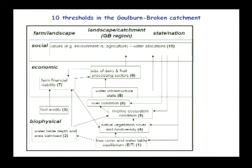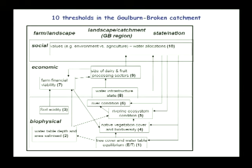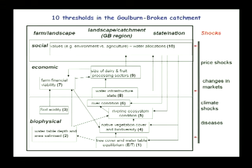I want to move on to multiple interacting thresholds, using our work in the Golden Broken catchment where we identified 10 thresholds we thought were critical. Each box is actually a threshold effect — they're in the social, economic, and biophysical domains of that system, occurring from the farm and landscape scale through to the state and national scale. So it's multi-scale and multi-domain. And that system is subjected to a bunch of shocks: price shocks, changes in markets, climate, diseases.